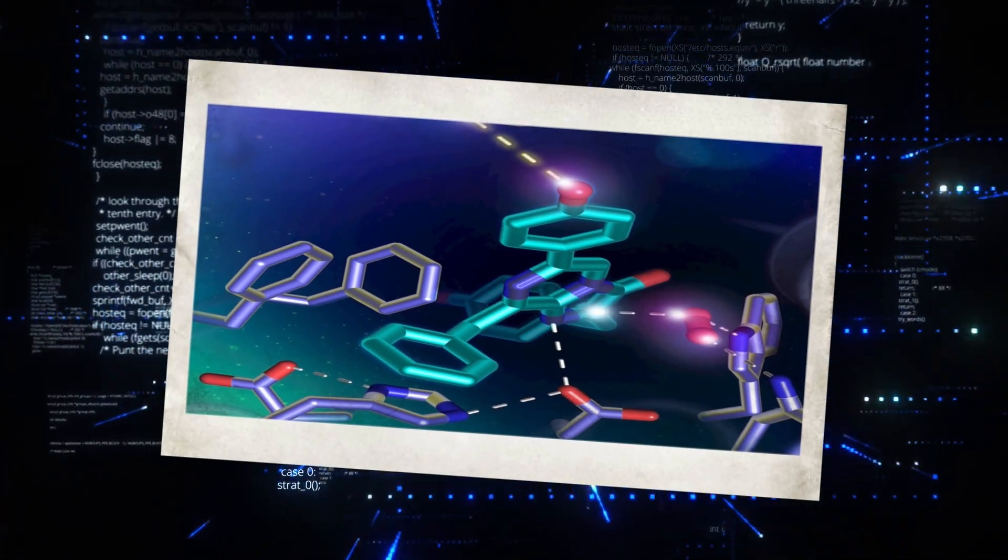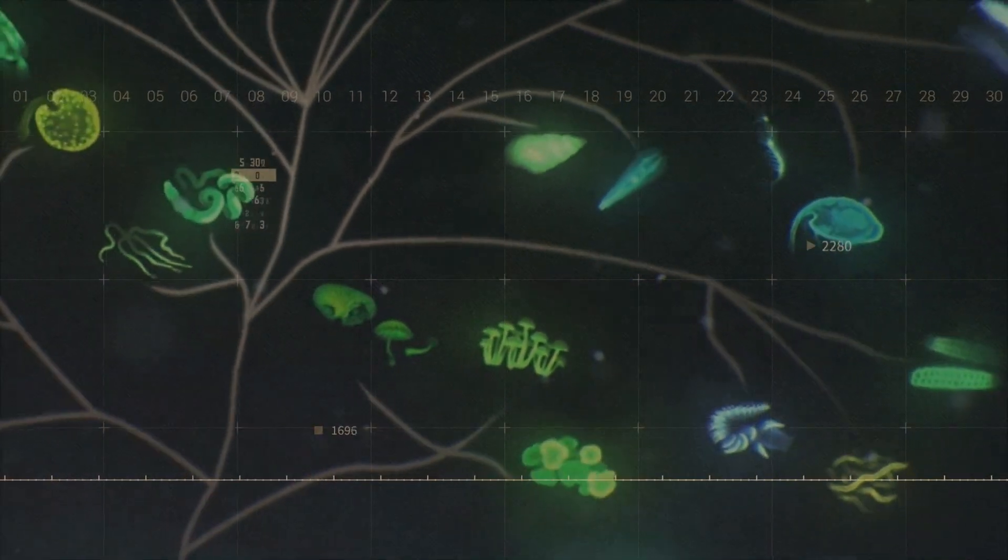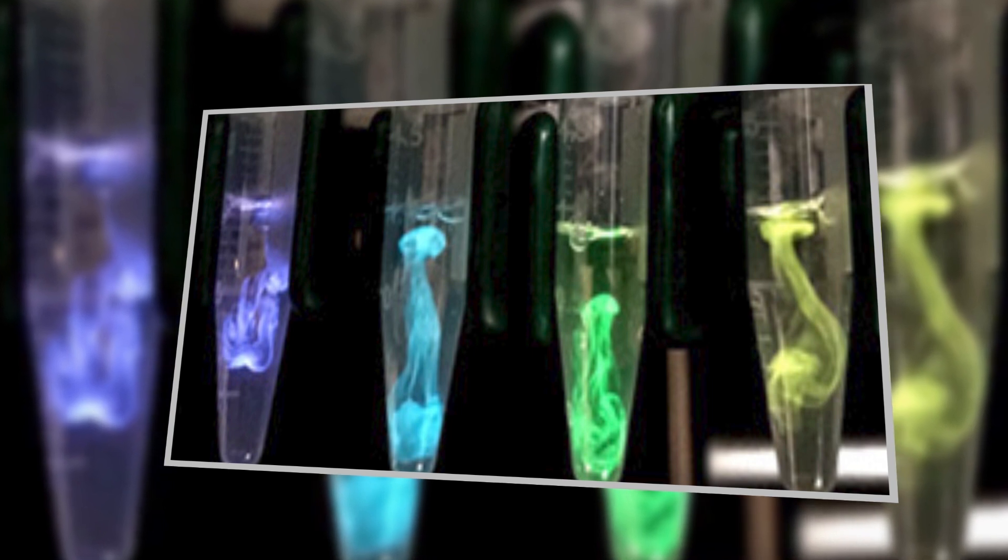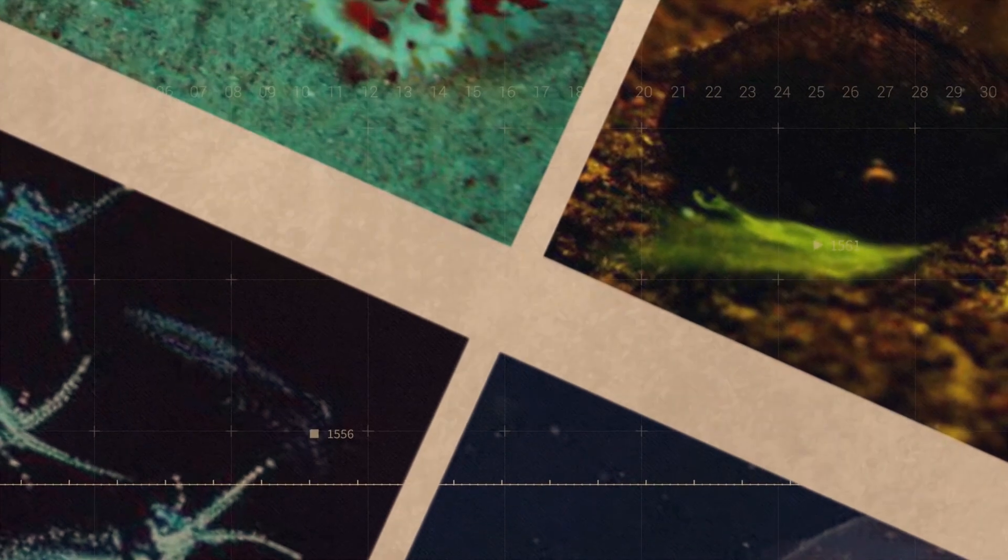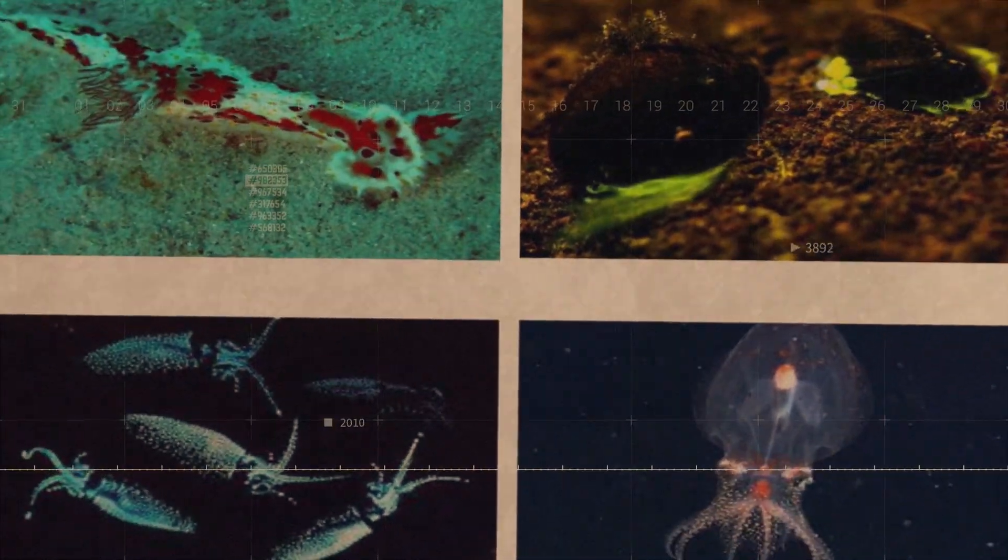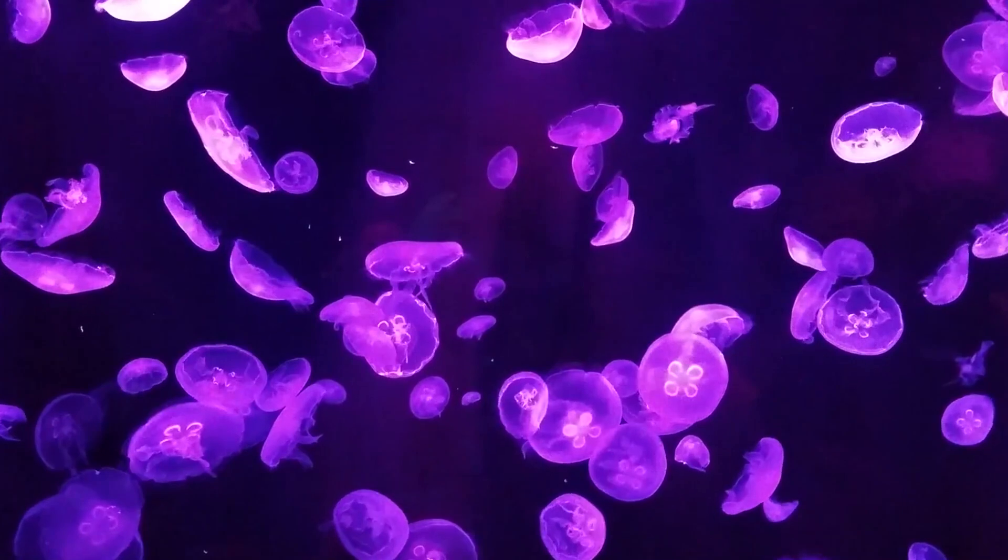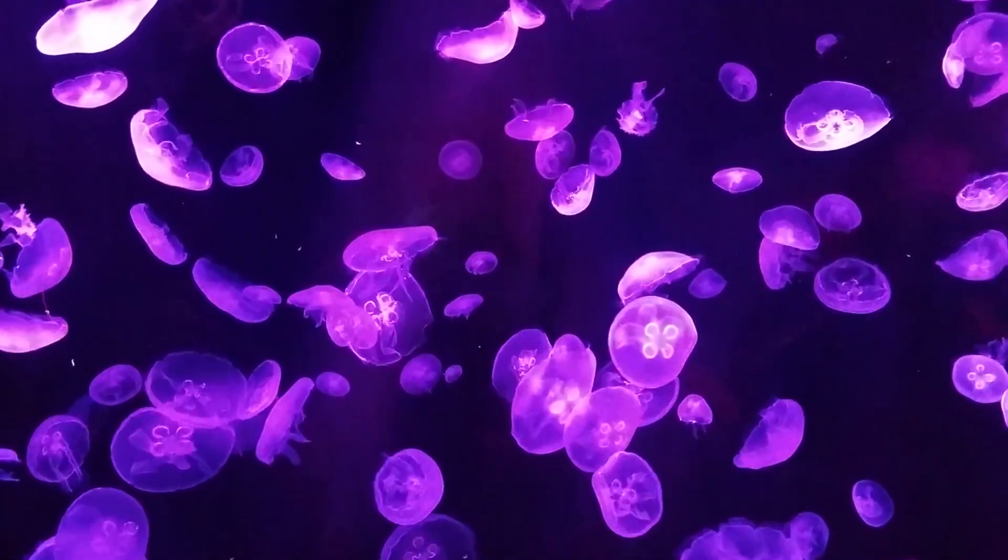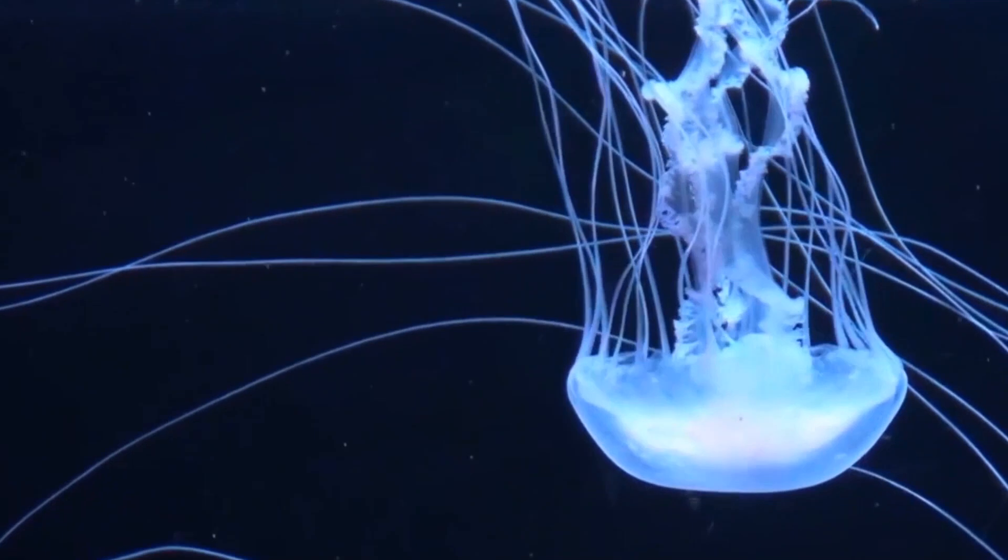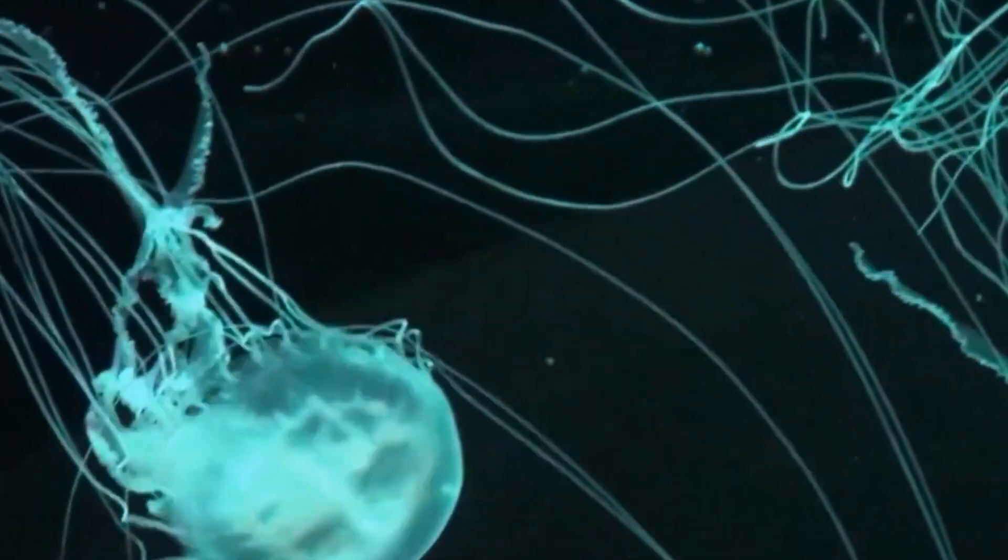Luciferin is the light-emitting compound, while luciferase acts as a catalyst for the reaction. When luciferin is oxidized, combined with oxygen, in the presence of luciferase, the result is the production of light. What's fascinating is that there isn't just one type of luciferin. Different groups of organisms have evolved their own versions of this molecule. For instance, the luciferin found in jellyfish is different from that in fireflies or deep-sea fish. This diversity in luciferins is one reason why bioluminescence can produce different colors in different species.